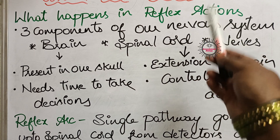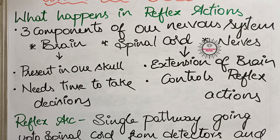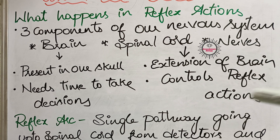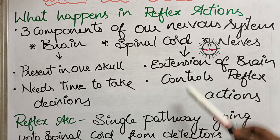But reflex actions need immediate responses. In dangerous situations, if the information were sent to the brain, the brain would need time to detect the danger, analyze it, and decide what to do — and in that time gap, danger might occur. So reflex actions are not under brain control; they are under the control of the spinal cord.